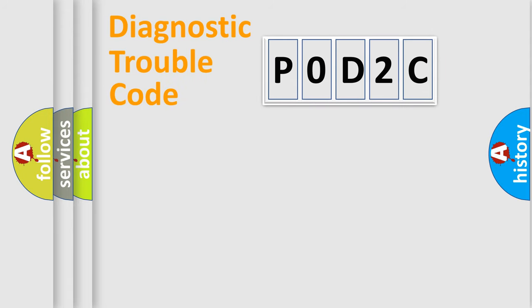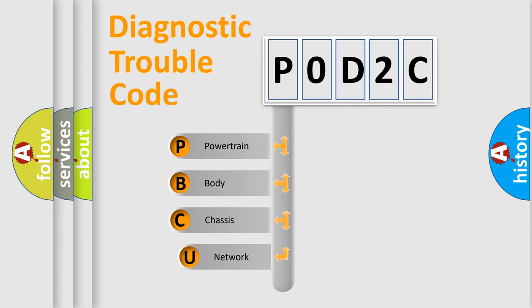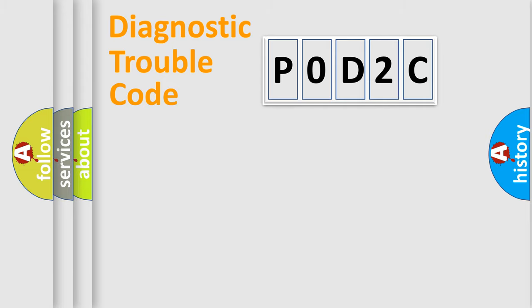First, let's look at the history of diagnostic fault code composition according to the OBD2 protocol, which is unified for all automakers since 2000. We divide the electric system of an automobile into four basic units: Powertrain, Body, Chassis, and Network.